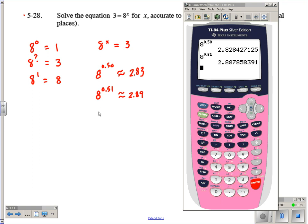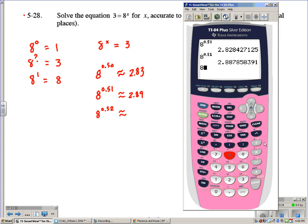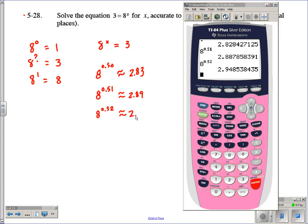So we're getting warmer. Let's try the next one, let's say 8 to the power of 52 hundredths. So let's say 8 to the power of 0.52. Now we're at about 2.95. Remember, I'm rounding these.